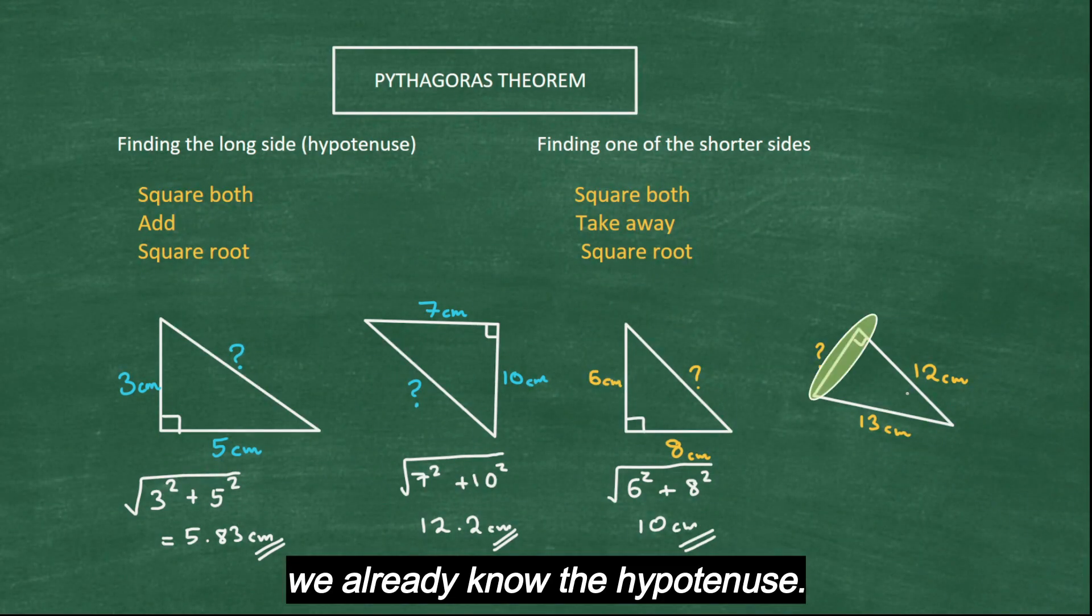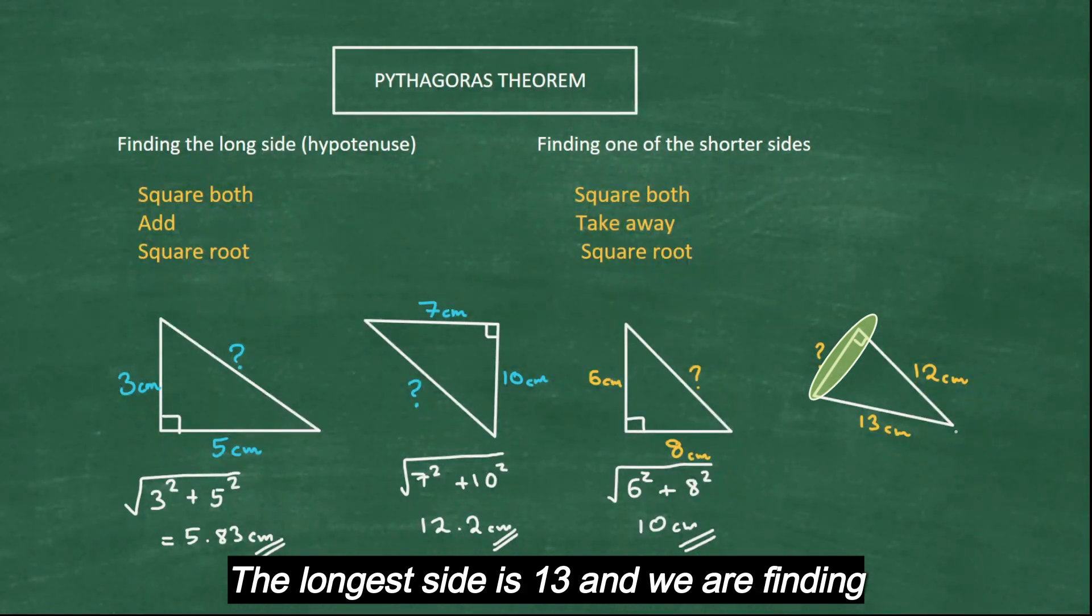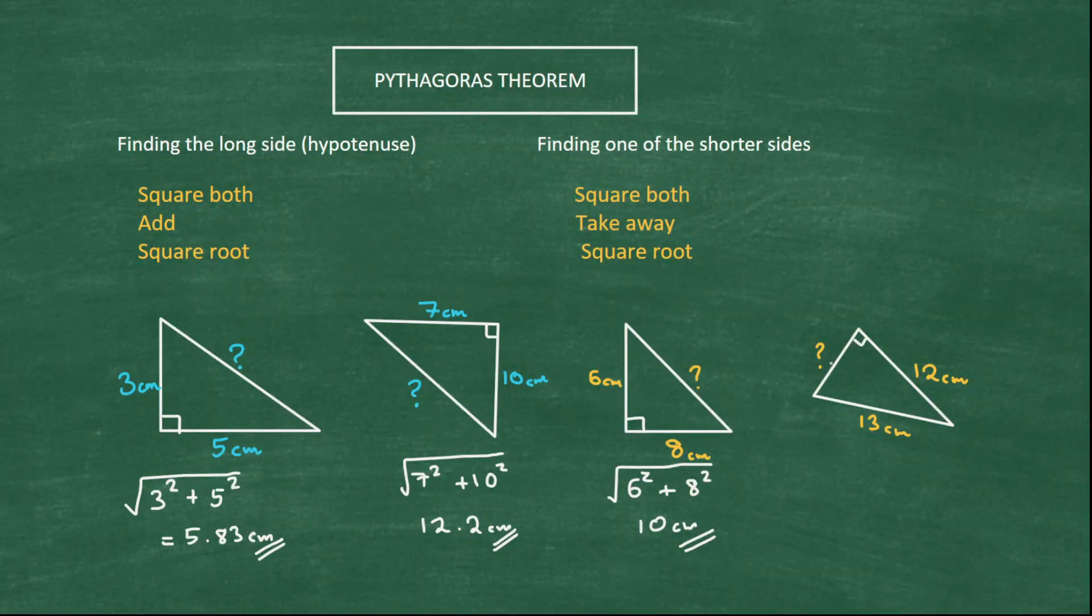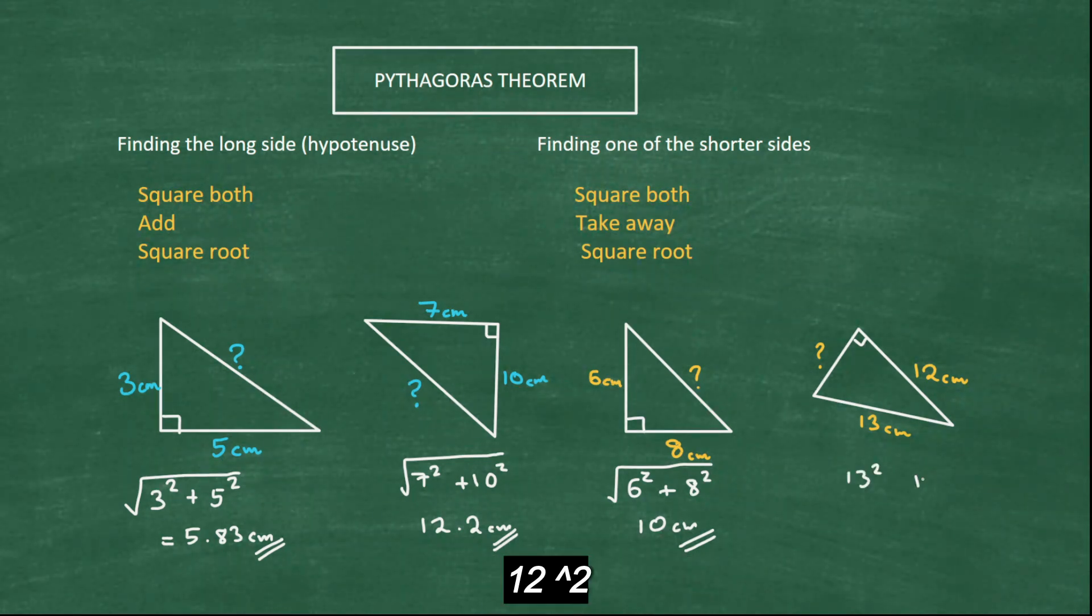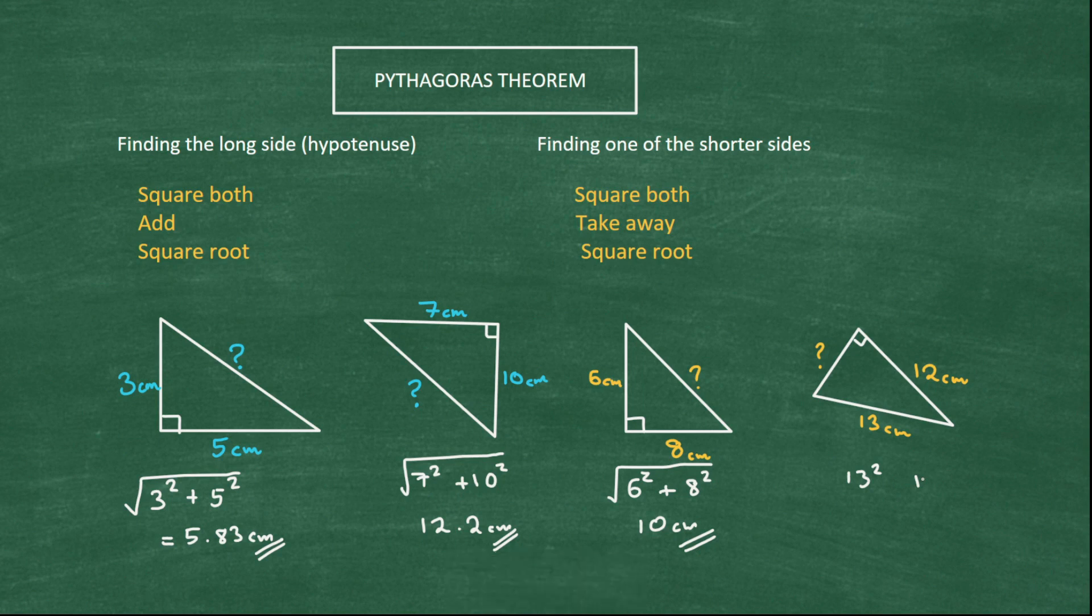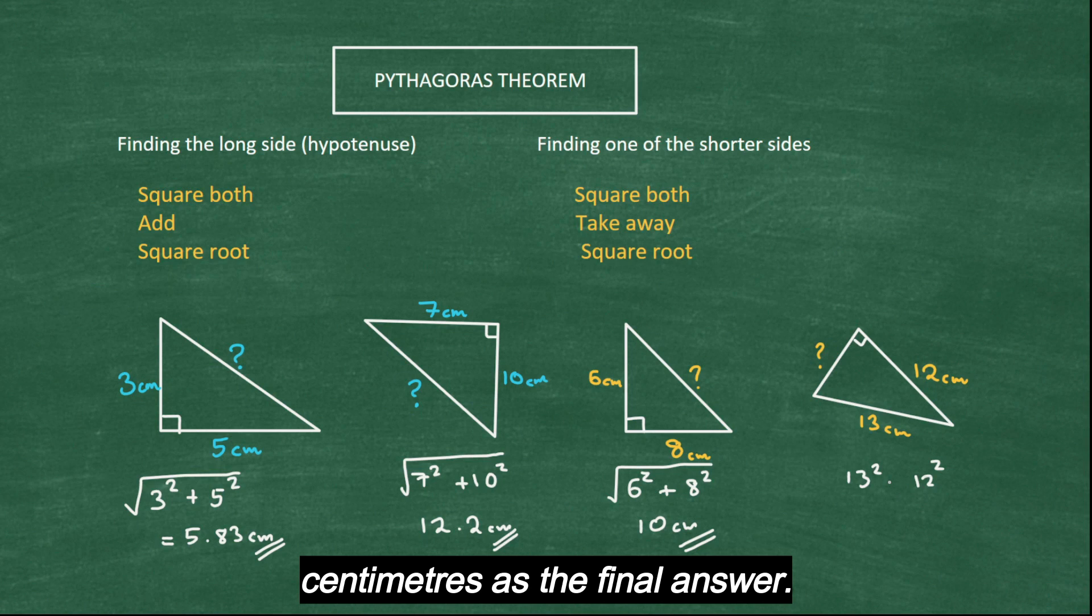Look at the last one. Now this time we already know the hypotenuse. The longest side is 13 and we are finding one of the shorter sides. So what do we do? Square both, but remember the big one first. So 13², 12², square both, take away and root it. And you get 5 centimeters as the final answer.